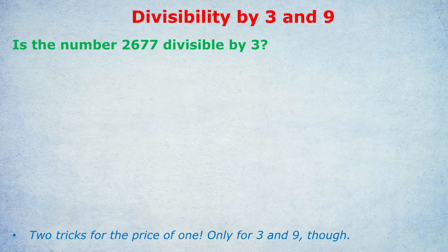But let's start with divisibility by 3 and 9. Is there a method? Turns out there is for quickly ascertaining whether a number is divisible by 3. And I'm also going to give you different examples of how they might ask that in a question. Is the number, for example, 2677 divisible by 3?